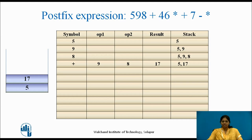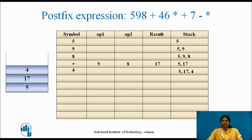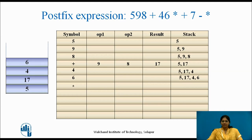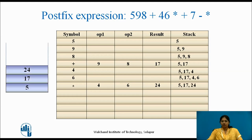The next symbol is 4 — it is an operand, pushed on the stack (stack: 5, 17, 4). Next symbol is 6, also an operand, pushed on the stack (stack: 5, 17, 4, 6 with 6 at top). The next symbol is the multiplication operator — pop the top two elements 6 and 4, perform multiplication, result is 24, push 24 on the stack (24 being the top of the stack).